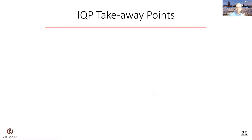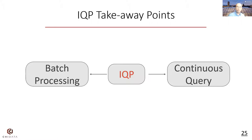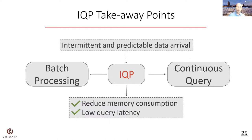To wrap up, we propose intermittent query processing that sits between batch processing and continuous query processing. It takes information about the intermittent and predictable data arrival pattern as input to reduce memory consumption and lower query latency at the same time.